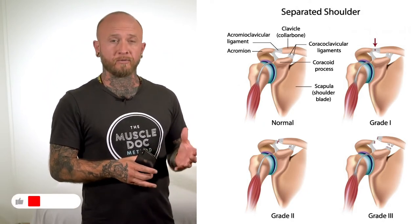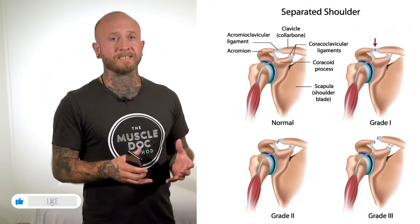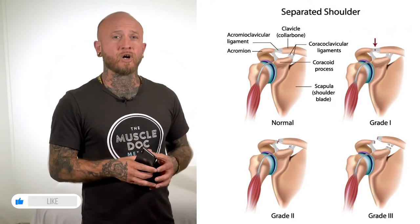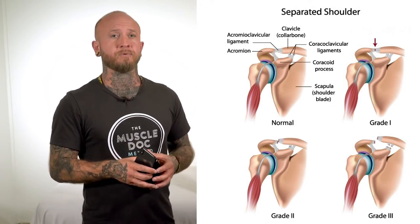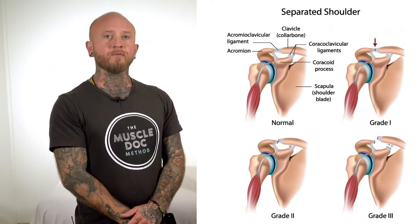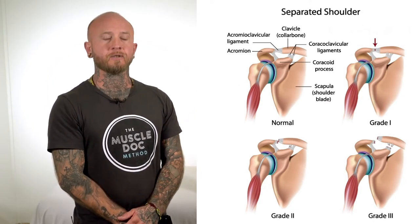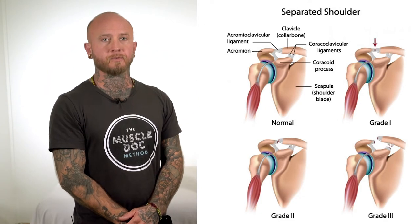Grade 3 involves rupture of both the AC and CC ligaments, which often results in an upward displacement of the clavicle bone. Grade 4 involves posterior displacement, or displacement backwards.